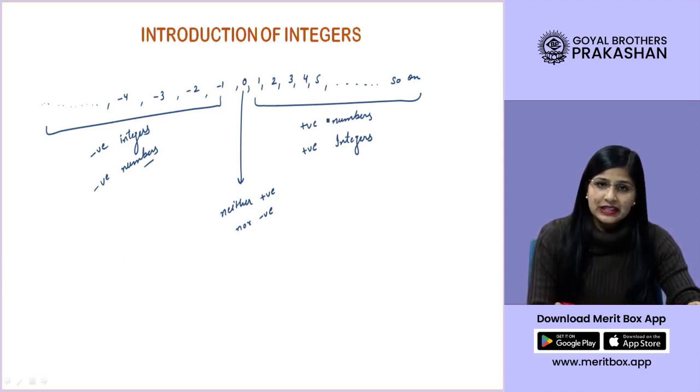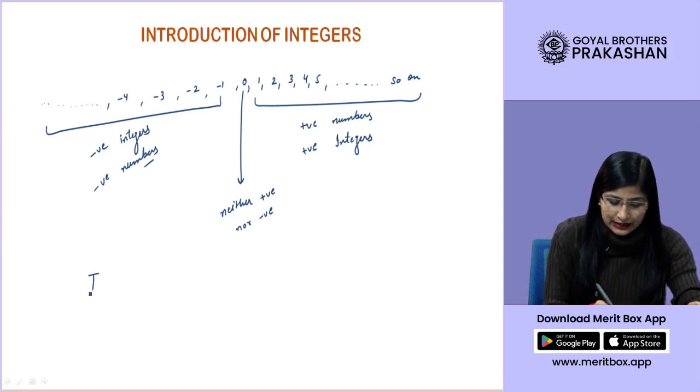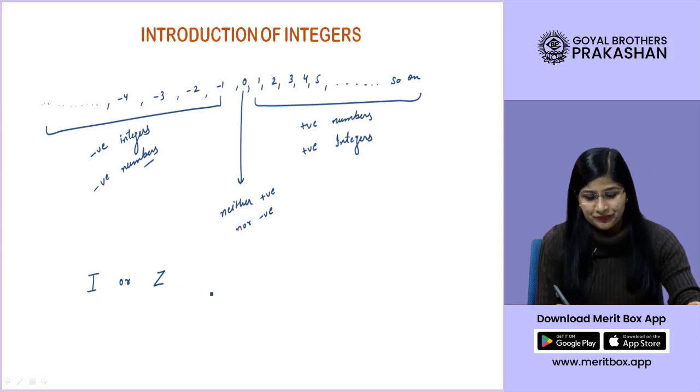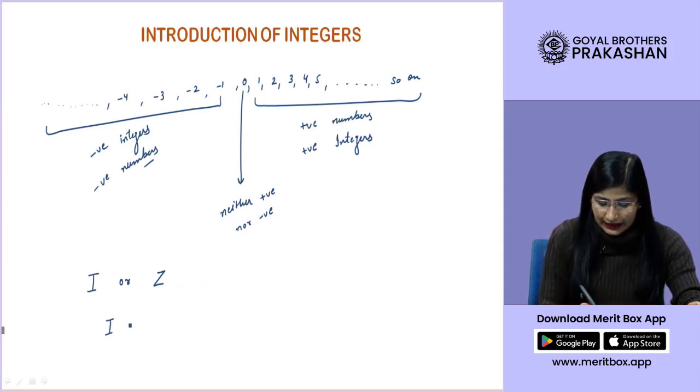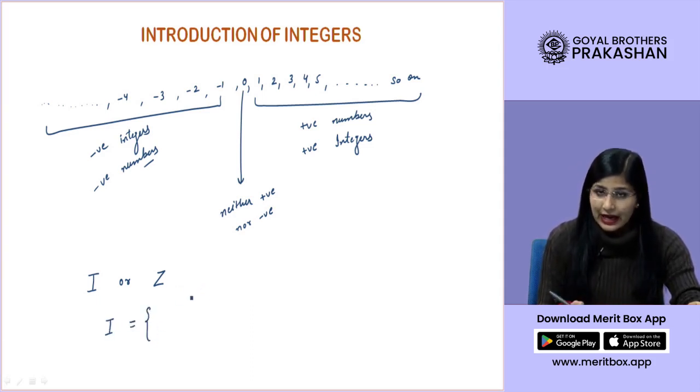Now, the set of integer is represented by either capital I or capital Z. So, you will write I, which is the set of integers. I is the representation for integers.